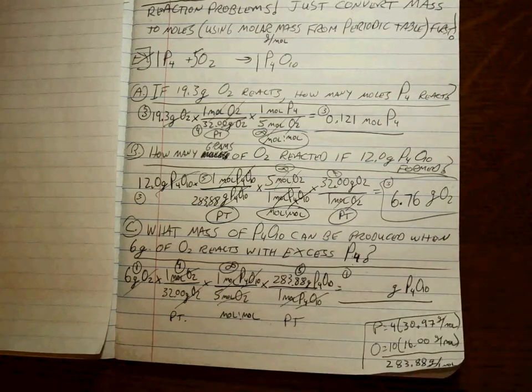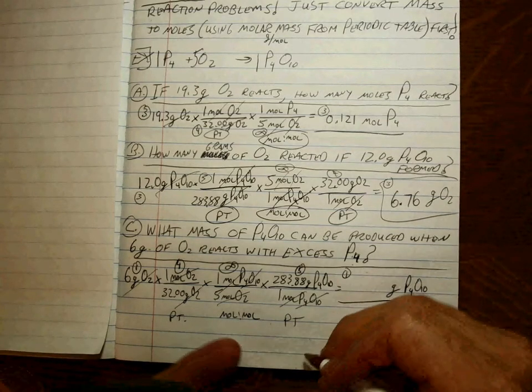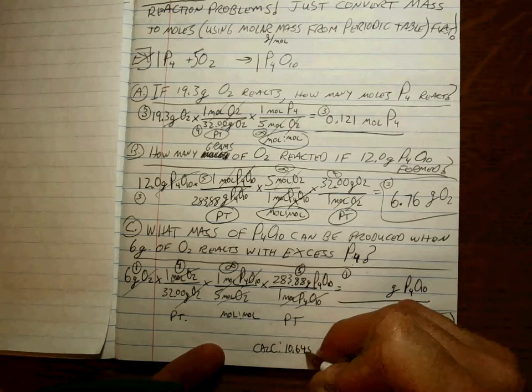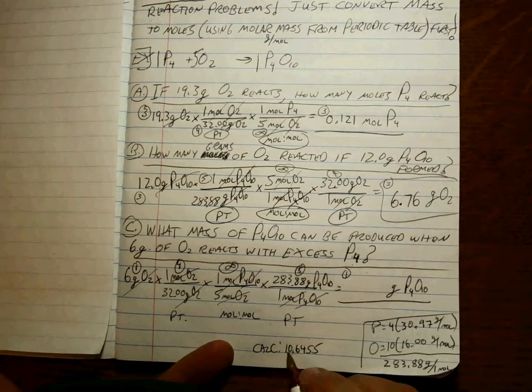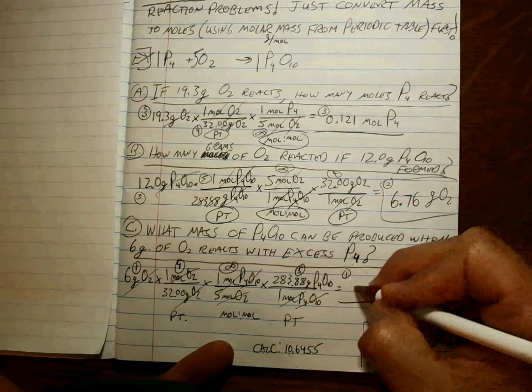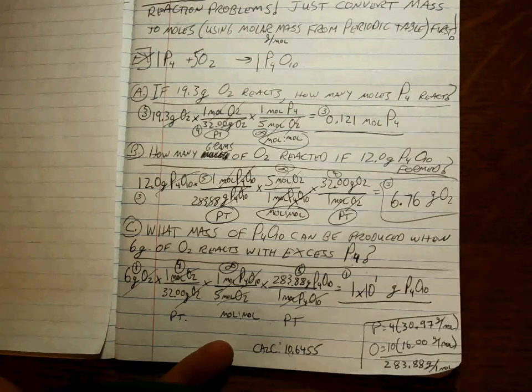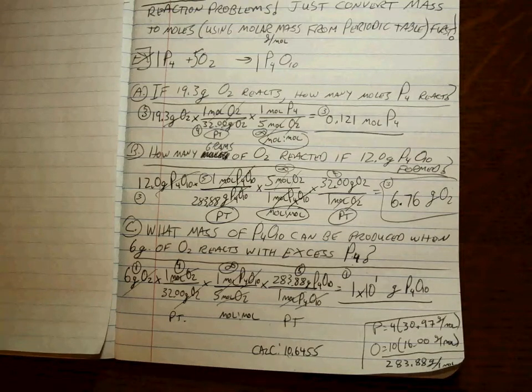So our answer only has one sig fig. So what is 6 divided by 32 divided by 5 times 283.88? My calculator gives me 10.6455. So I'm going to make that 1 times 10 to the plus 1 because it's a big number. 1 times 10 to the plus 1 grams of P4O10. That's your final answer there. That's all you need.